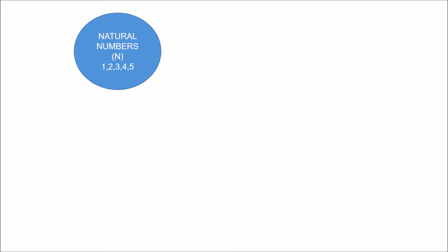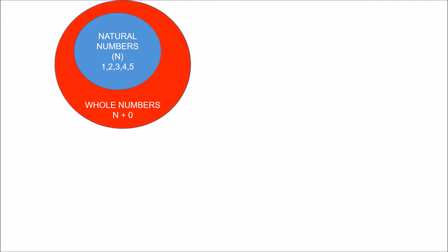As we build our number system, we thought: what about zero, where does that fit in? Well, whole numbers include all of the natural numbers — 1, 2, 3, 4, and 5 — and they also include zero as well.